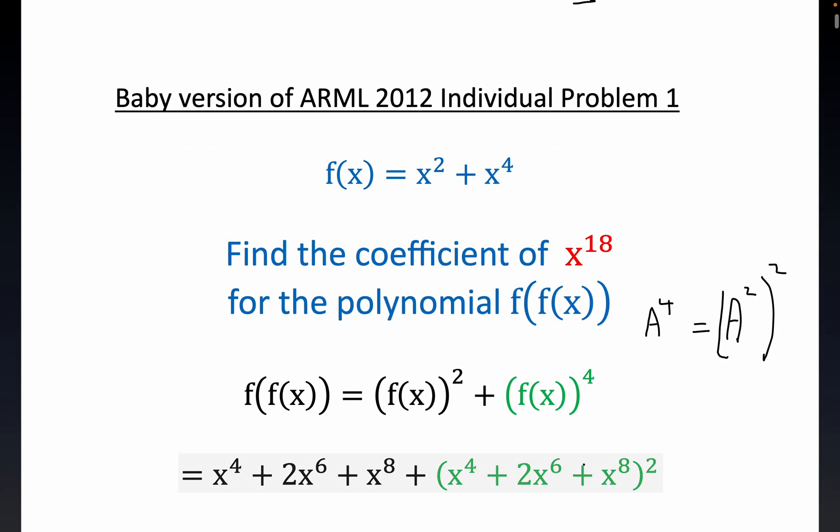Okay, now right here, f of x squared, that's pretty easy to see. That's just x squared plus x to the fourth quantity squared, right?